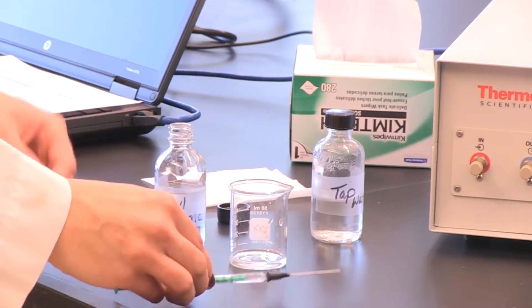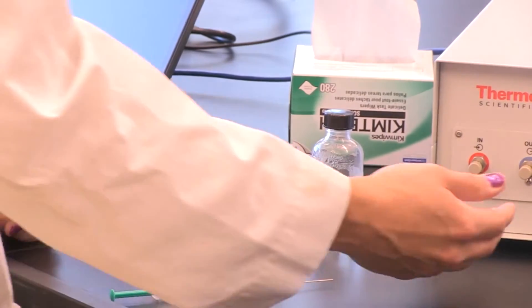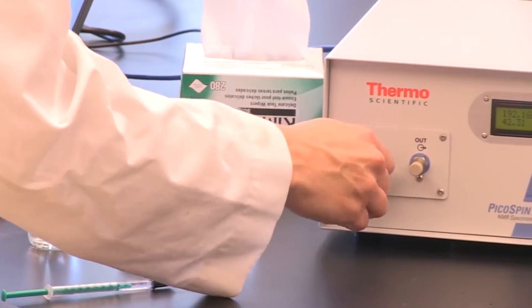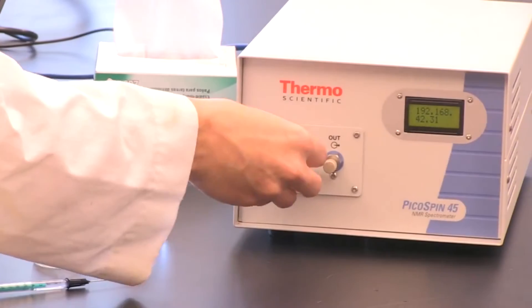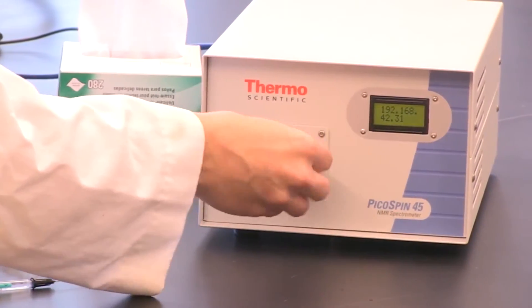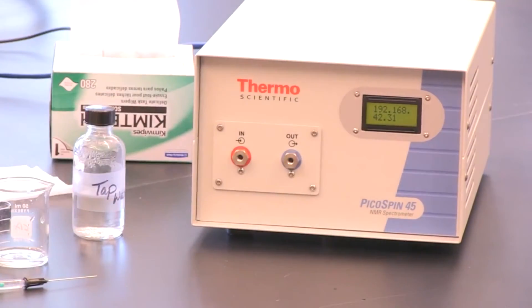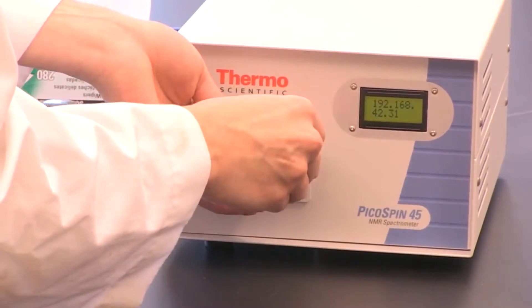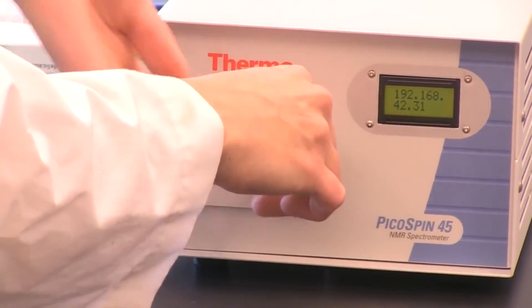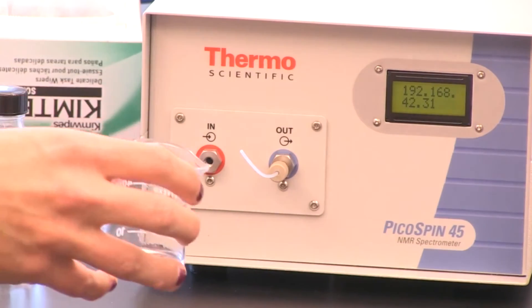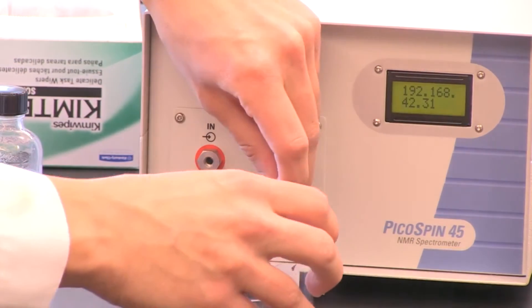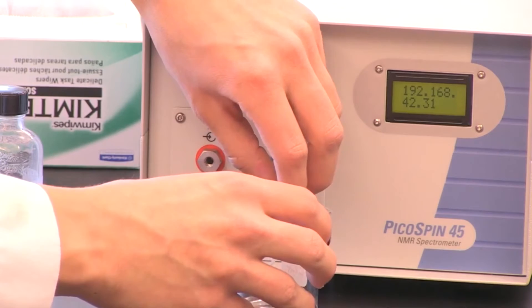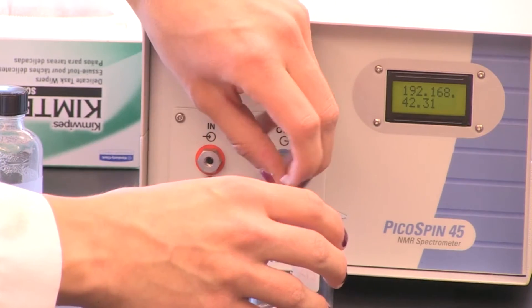So now that we have our sample in our syringe, we are going to turn our attention to the instrument. We are going to remove both of the peak plugs in the in and on the out port. In the out port, we are going to insert the drain tube plug. And then we want to situate the waste container beaker so that the drain is going into the waste beaker.